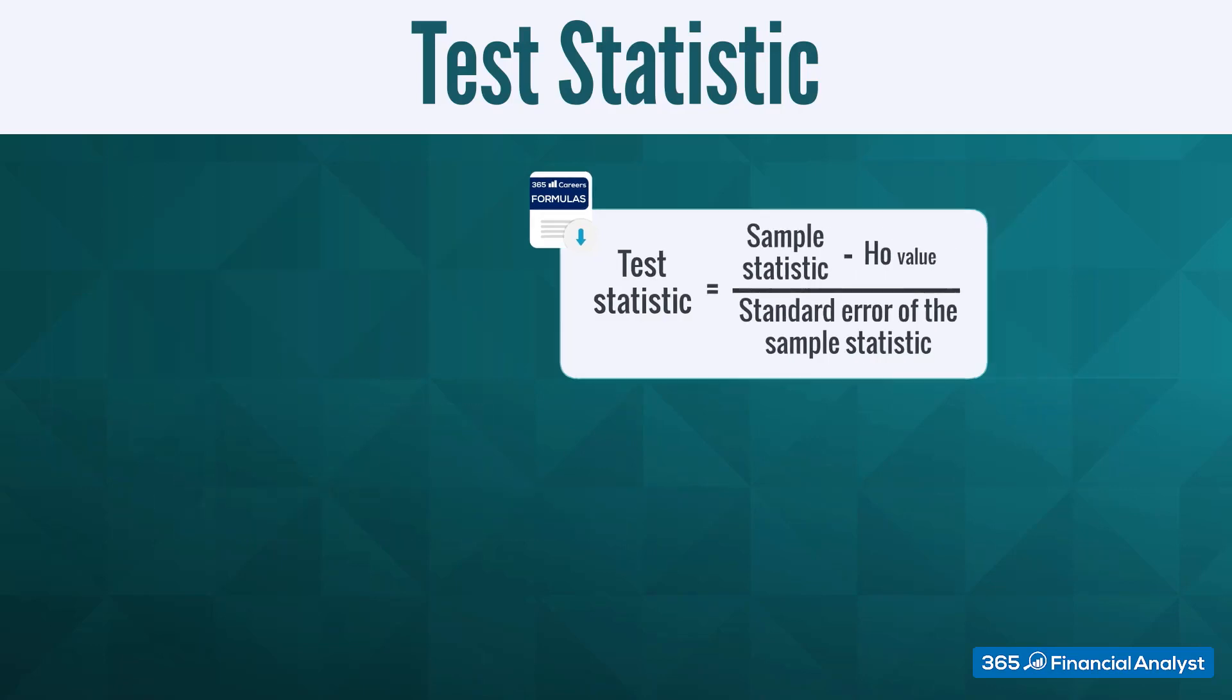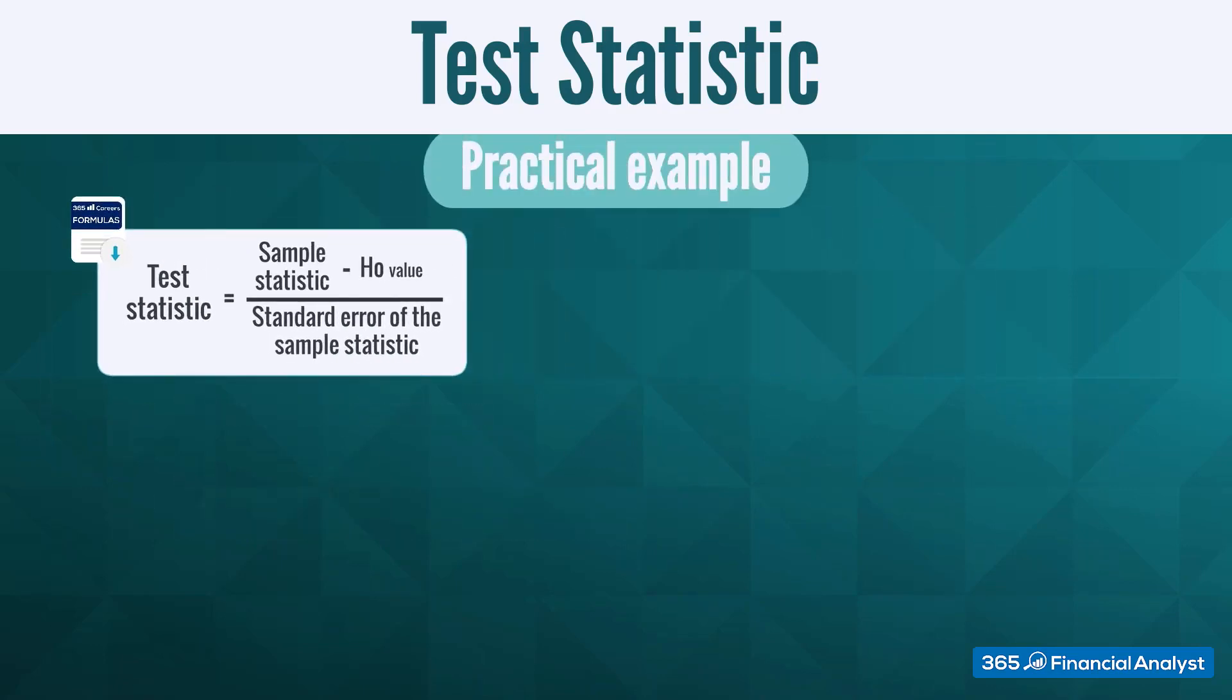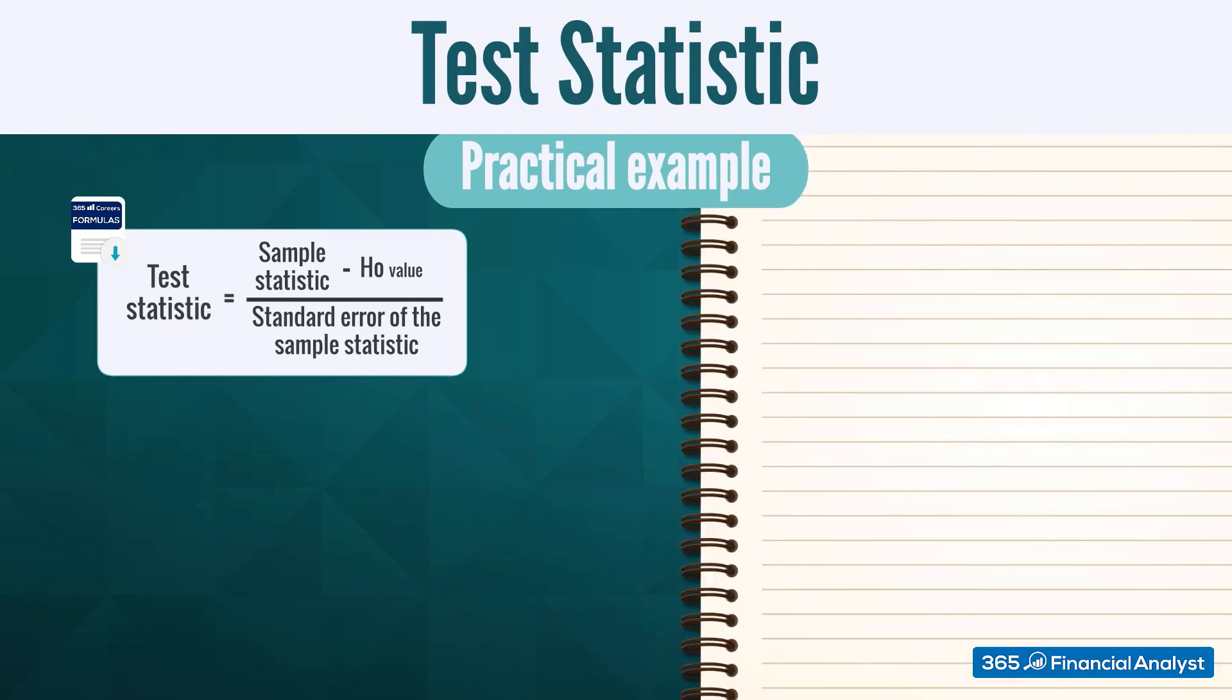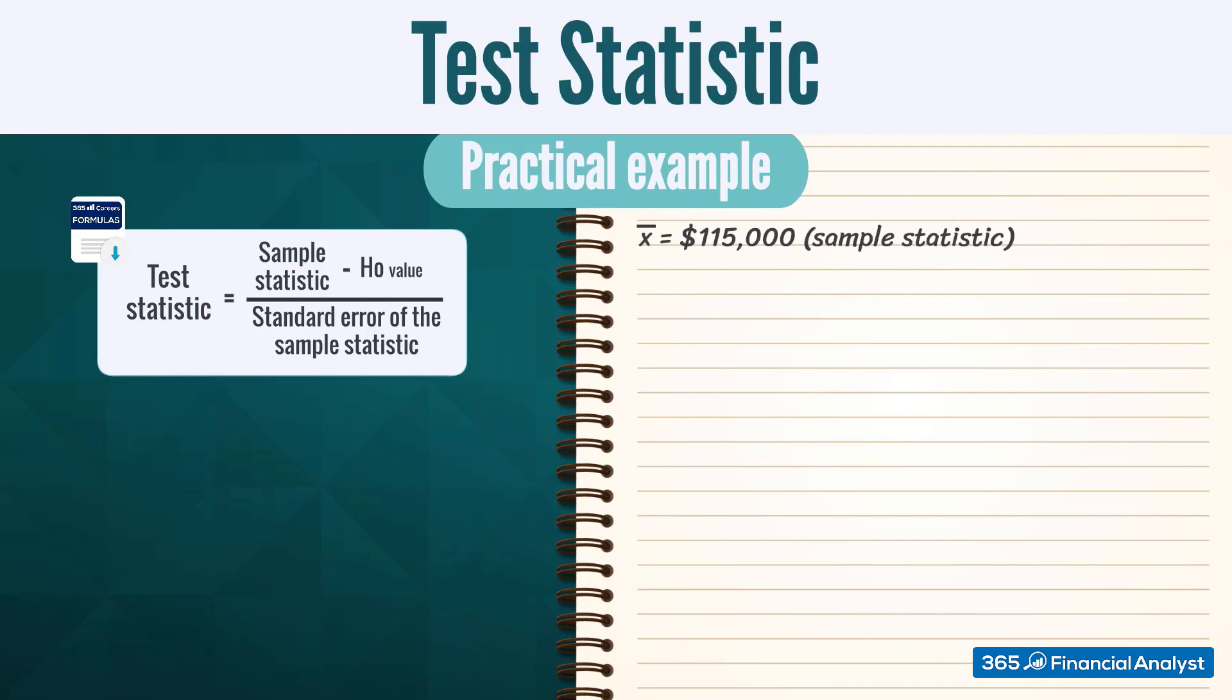Taking our example from earlier, let's suppose we have the following numbers. The mean financial analyst salary in the sample is $115,000. This is our sample statistic. And we also have a sample standard deviation of $3,000. The sample contains 25 observations.